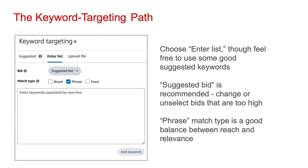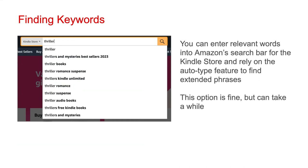Phrase match is a nice mix of exact and broad, where your ads are targeted to exact matches of the keyword in addition to close matches. Phrase match is a good balance between reach and relevance. To find keywords, you can enter relevant words into Amazon's search bar or the Kindle store and rely on the auto-type feature to find extended phrases of the words you type in. This option is fine, but it can take a while to compile a large enough keyword list to get your ad good visibility.